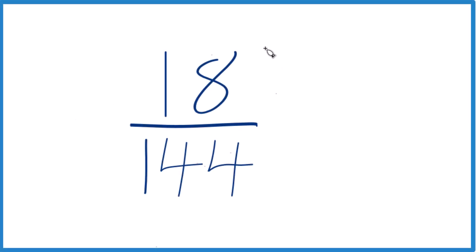Let's simplify the fraction 18 144ths, so 18 over 144. What we want to do is get it down to lowest terms,